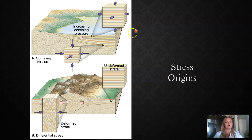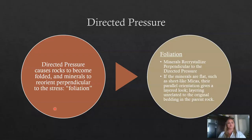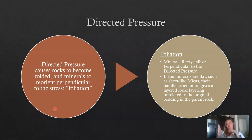If stress originates from all sides of the rock, the rock just gets more compact and smaller. If the pressure is from two sides — directed pressure — you get wavy lines, as horizontal strata start to become more and more wavy. In lab, you'll watch a video of a science experiment using Play-Doh and sprinkles to show what happens when directed pressure is applied. Directed pressure causes rocks to fold and minerals to reorient themselves perpendicular to the line of stress and parallel to each other, forming something called foliation.